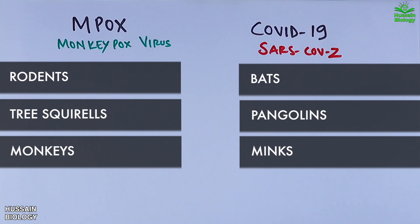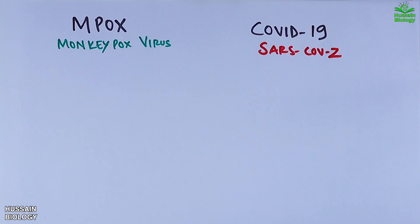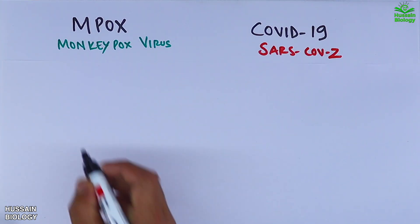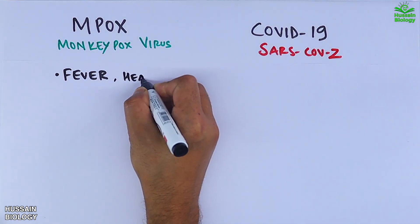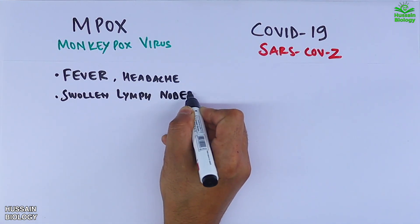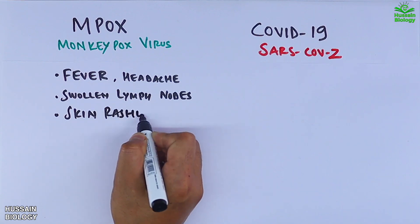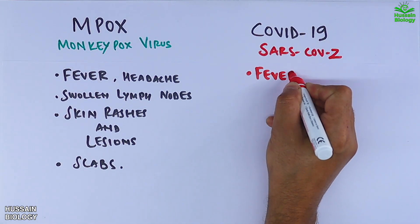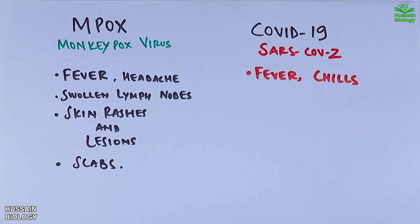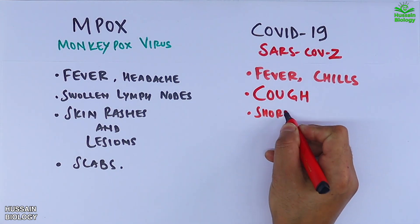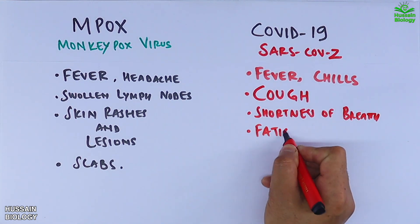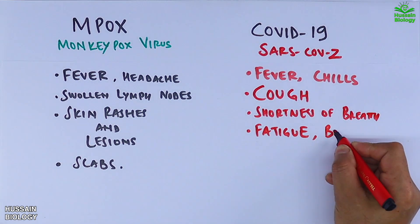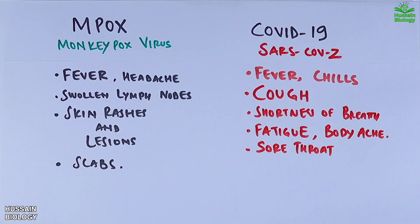For mpox, clear initial symptoms include fever, headache, and swollen lymph nodes, followed by skin rash and lesions. COVID-19 symptoms include fever or chills, cough, shortness of breath, fatigue, muscle or body ache, headache, sore throat, loss of taste or smell — and there are also asymptomatic cases.